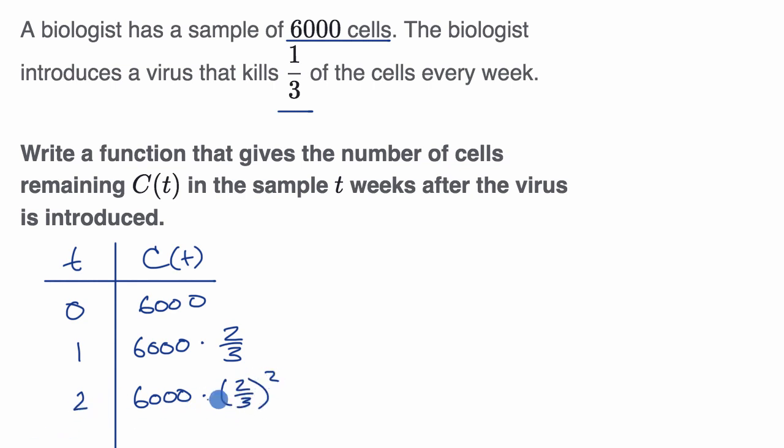So once again, you are likely seeing the pattern here. We are going to, at time T equals zero, we have 6,000. And then we're going to multiply by two thirds however many times, however many weeks have gone by. So the cells, as a function of the weeks of T, which is in weeks, is going to be our original amount. And then however many weeks have gone by, we're going to multiply by two thirds that many times. So times two thirds to the T power. And we're done.